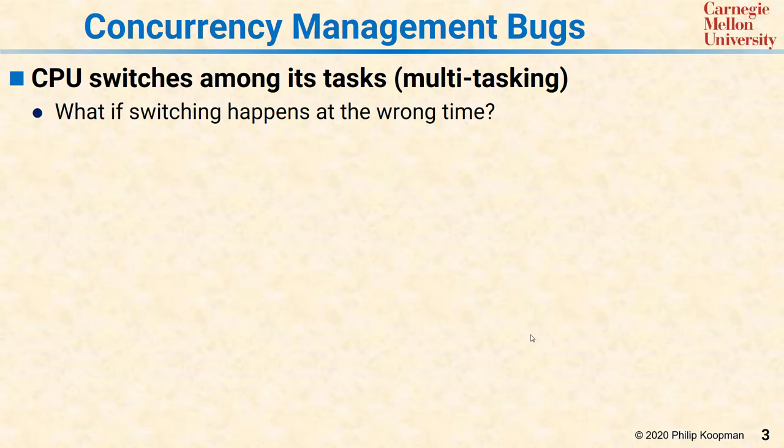Let's start our tour of concurrency management bugs by considering a single CPU system with a shared resource. If you have a CPU that switches among its tasks — so it's multithreaded or multitasking — ask the question: what happens if the task switching happens at the wrong time? The result can be concurrency bugs due to shared resources.